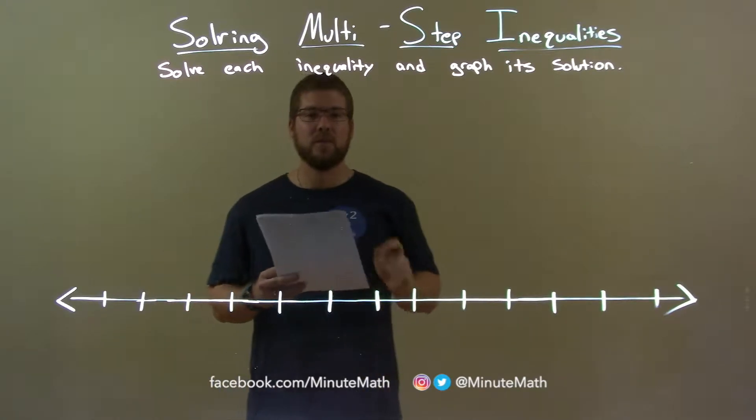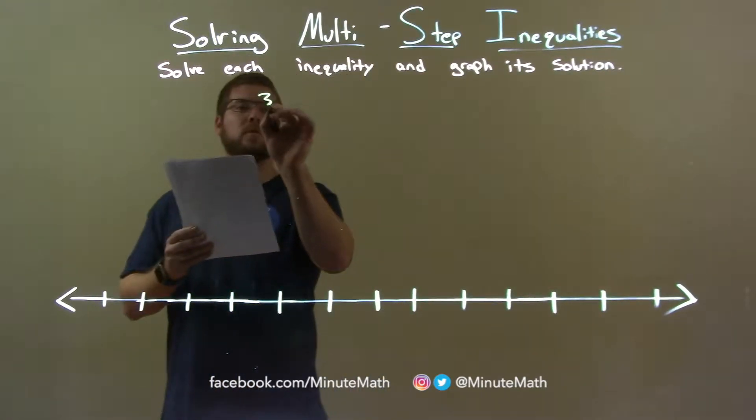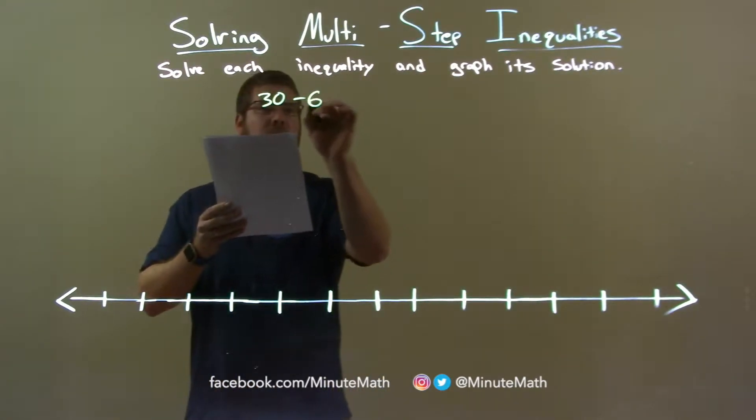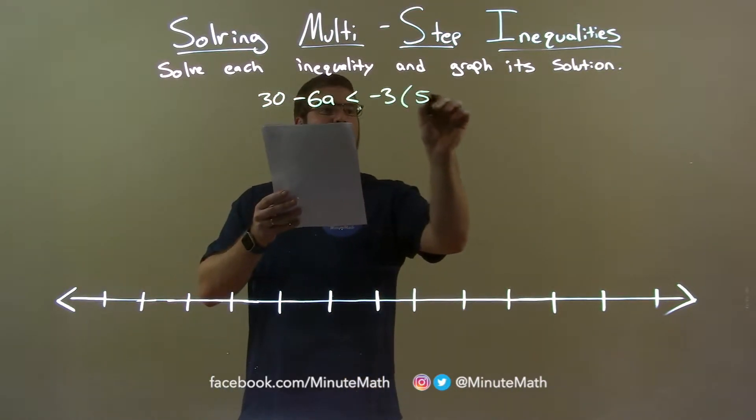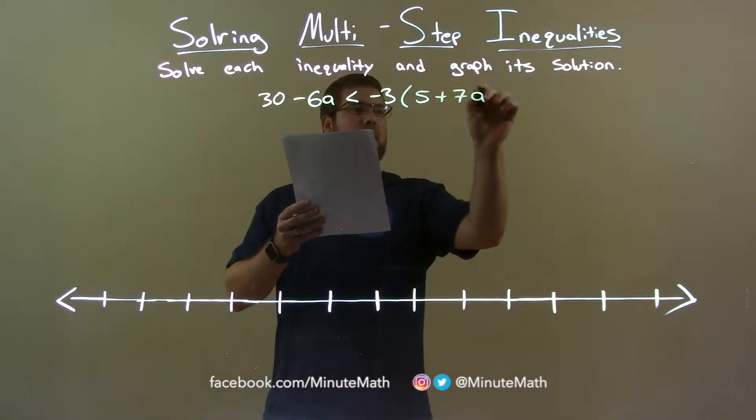So, if I was given this inequality, 30 minus 6a is less than negative 3 times 5 plus 7a.